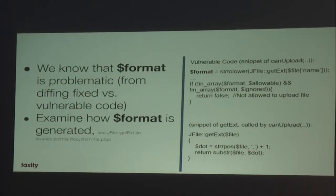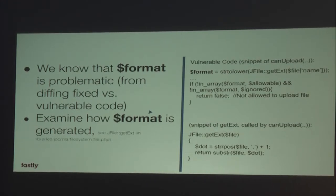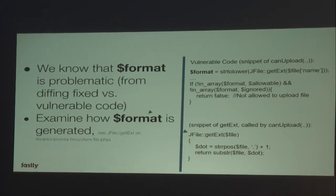So why does this vulnerability occur? We know the variable called "format" is problematic — it stores the file name extension. Let's look at how that variable is generated. "format" stores the result of getExt. If you look at this internal Joomla function, getExt uses two PHP standard string functions: strrpos and substr. Effectively it says: starting from the end of the string, move leftward to find the first occurrence of a period, then increment by one — that is the starting position from which to extract the file name extension, which is what substr does.